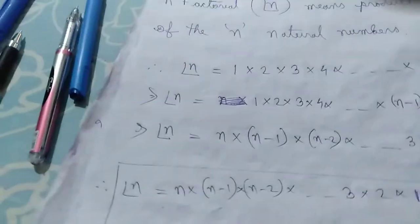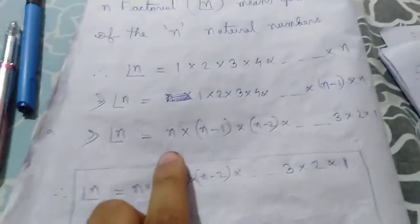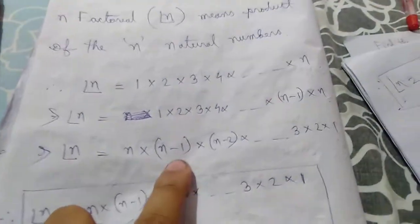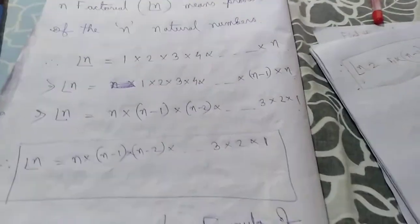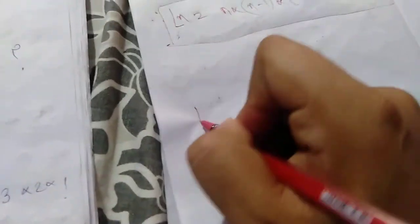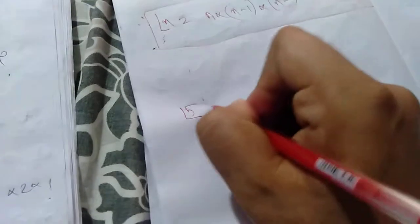The formula is: n factorial equals n into (n minus 1) into (n minus 2) dot dot dot 3 into 2 into 1. This is the formula to hold.